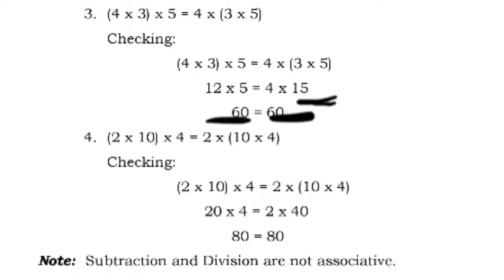Number 4: the quantity of 2 times 10, times 4, equals 2 times the quantity of 10 times 4. 2 times 10 is 20, times 4 equals 80; and 10 times 4 is 40, times 2 is 80. They are equal. Note: subtraction and division are not associative. This property only applies to addition and multiplication.